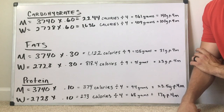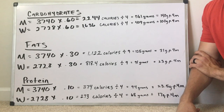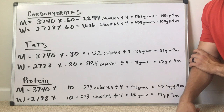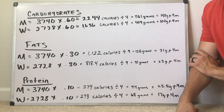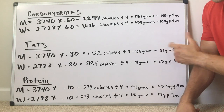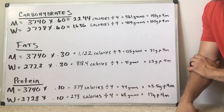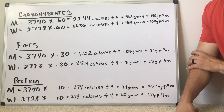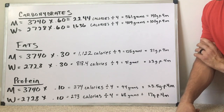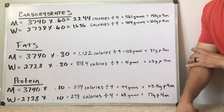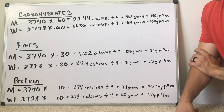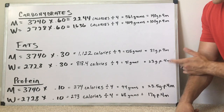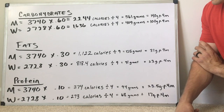For fats, men take 3,740 times 0.30, which equals 1,122 calories from fat. Since it takes 9 calories to burn 1 gram of fat, that's 125 grams of fat per day, and dividing by 4 is about 31 grams per meal. For women, 2,728 times 0.30 equals 818 calories, or 91 grams of fat per day, which equals 23 grams per meal.